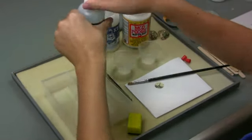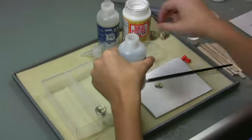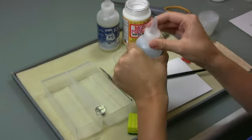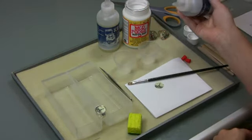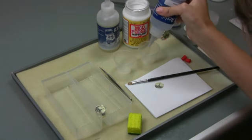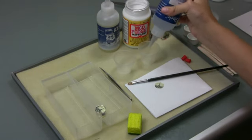Cut the tips off the dispensing caps and put them onto the resin and hardener bottles. Pour a quarter ounce Part A resin in one cup and a quarter ounce Part B hardener in the other cup.